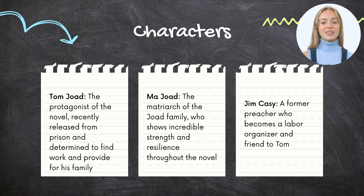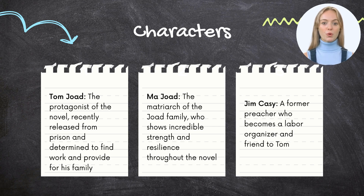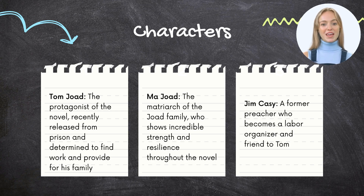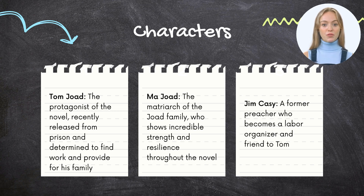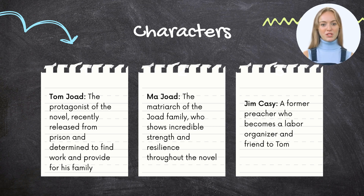Tom Joad is the protagonist of The Grapes of Wrath. Initially portrayed as hardened and cynical, he becomes more politically aware over the course of the novel. He takes a leadership role in advocating for better working conditions and standing up to those who would oppress his fellow workers. He also embodies the importance of family and community, coming to see their value and strength. Tom is a complex portrayal of the struggles and resilience of working-class Americans during the Great Depression, symbolizing justice, collective action, and family and community.